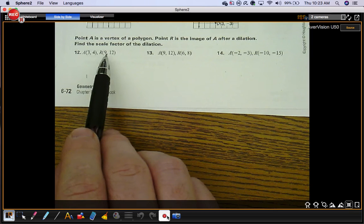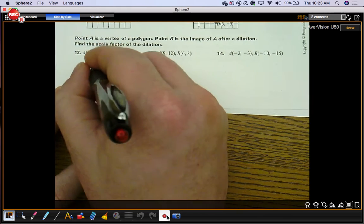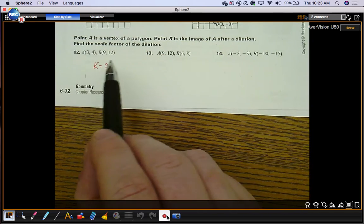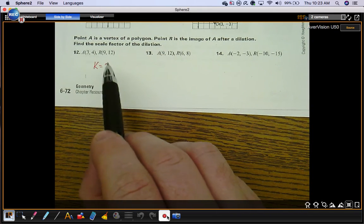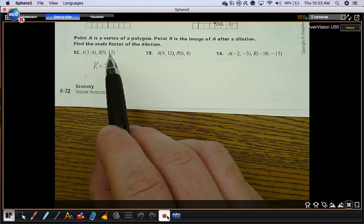3 times something is 9. 4 times the same thing gives you 12. Definitely 3. 3 times 3 is 9. 4 times 3 is 12.